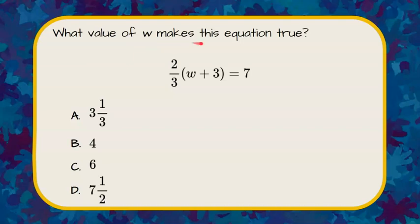What value of W makes this equation true? Two-thirds times W plus 3 equals 7.